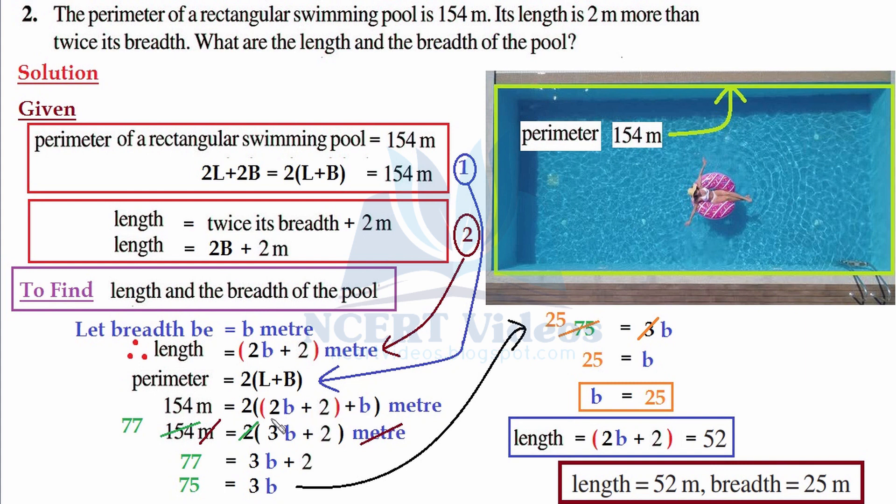That is, their value doesn't change. So 2b plus 1b is 3b, and plus 2 as it is, obviously meter. Now meter meter get cancelled.